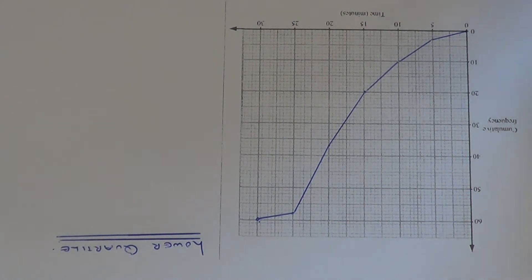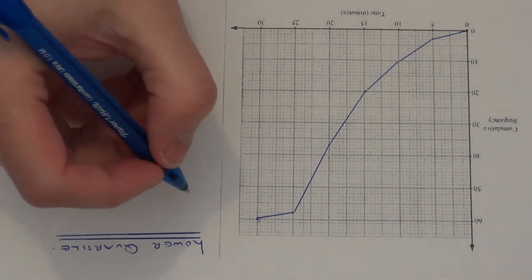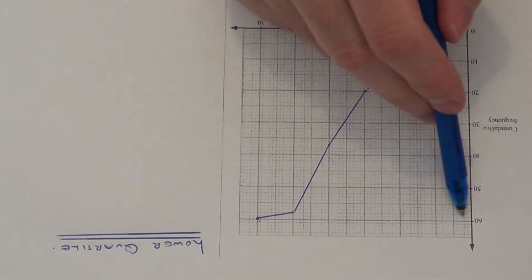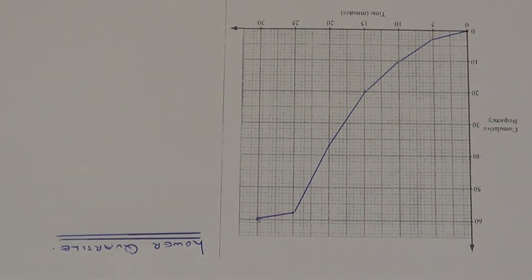The first thing you need to know about the lower quartile is that it occurs a quarter of the way through the data. We need to look at the top of the graph which is 60, so this tells us there are 60 runners altogether in the race. And we need to work out a quarter of 60.